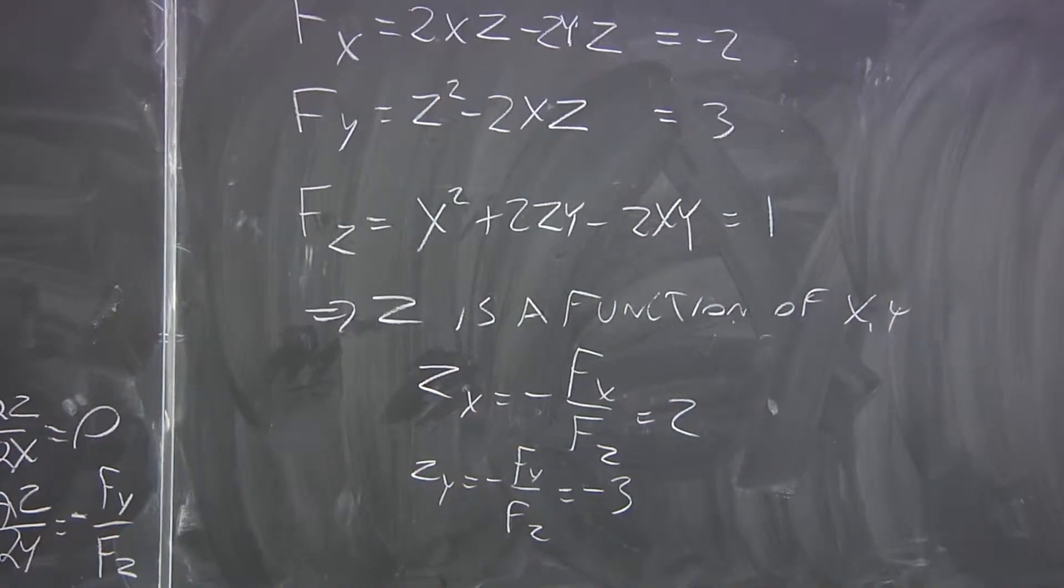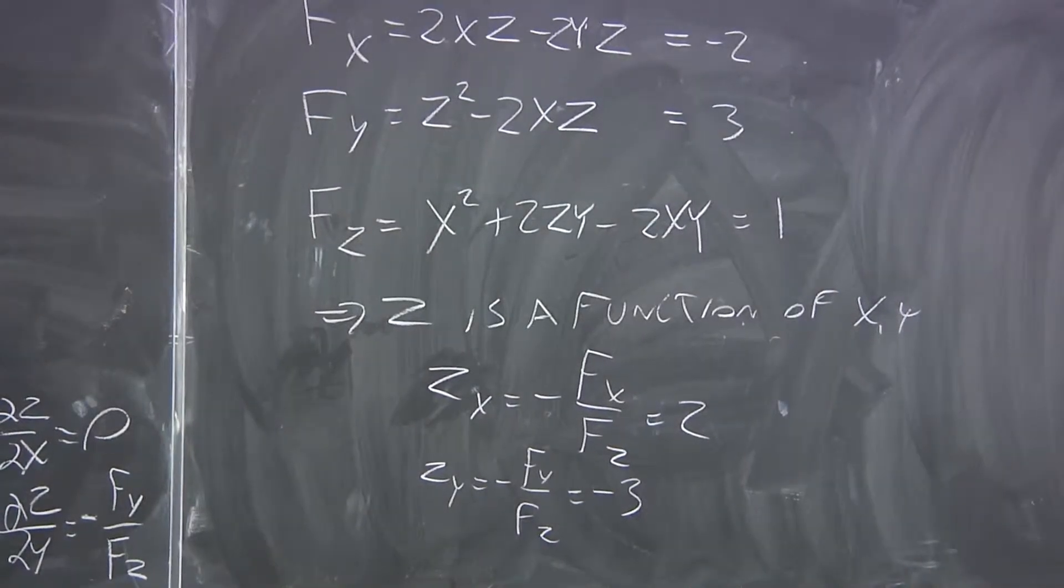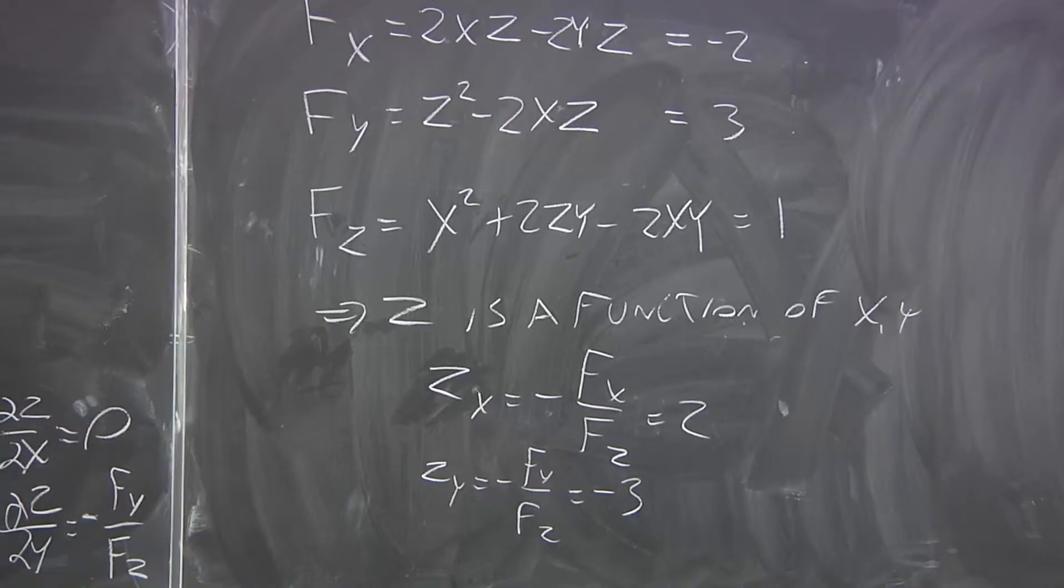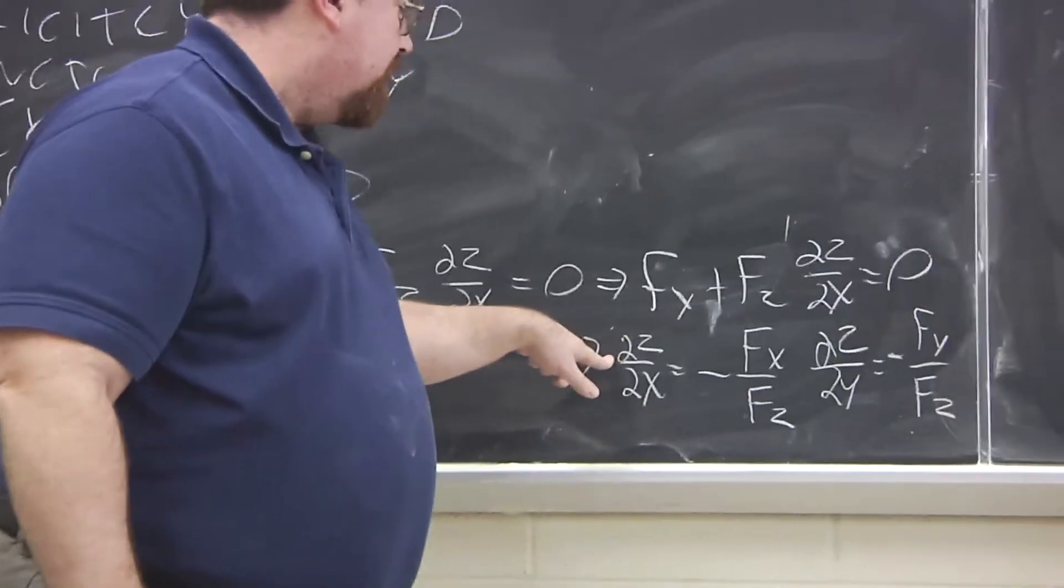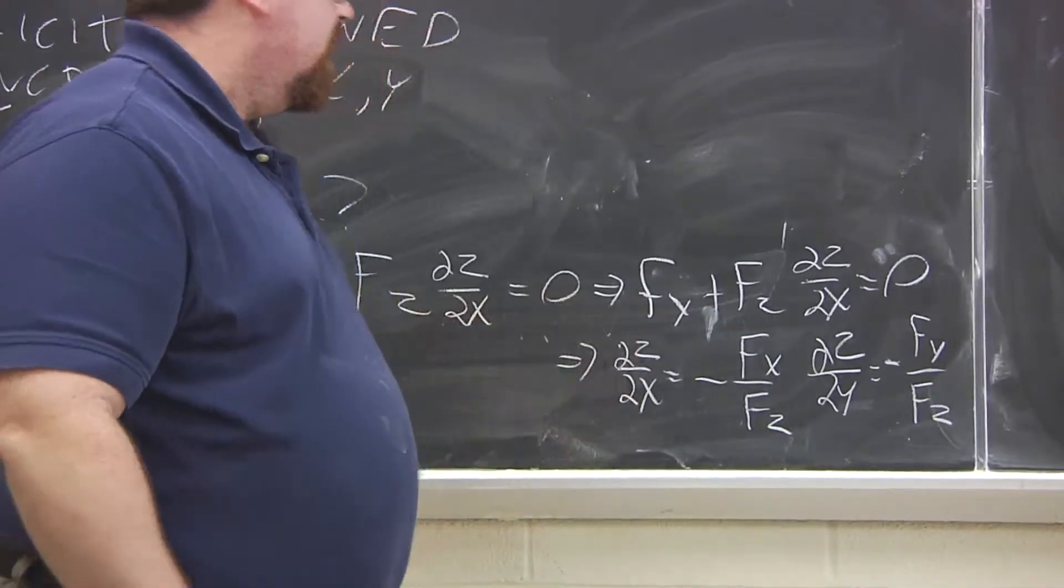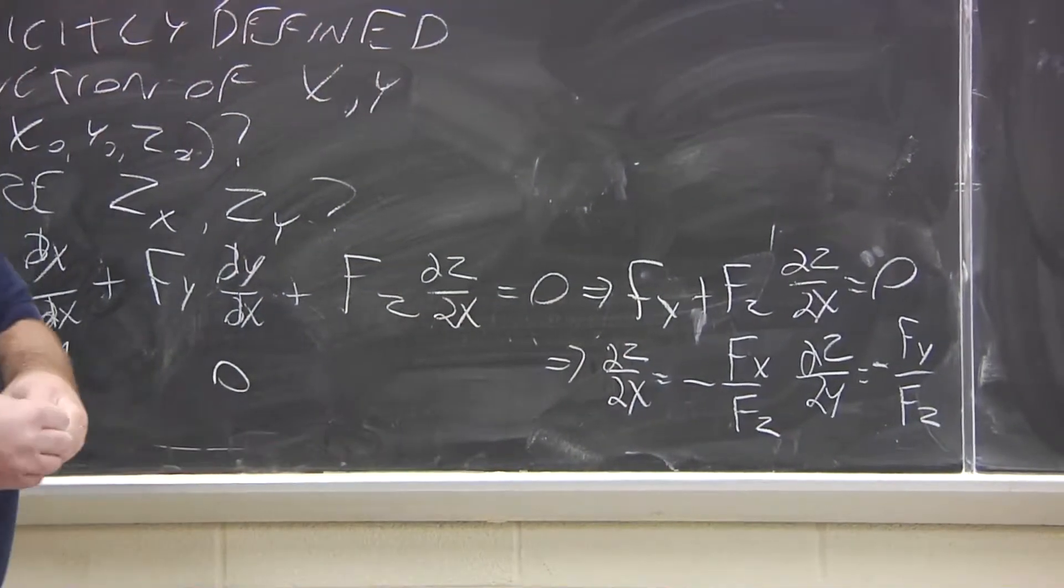So, you can have any number of independent variables, and then one dependent variable, which would be Z in this case. This is how you get all of the partial derivatives of the dependent variable with respect to any of the independent variables.